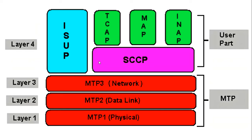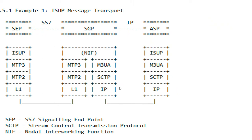This is just a recap of my earlier video. Here you can see the MTP3 SS7 layers: MTP1, MTP2, MTP3. In SIGTRAN, MTP Layer 1 and Layer 2 are replaced with SCTP and IP, so the two nodes communicate over SCTP.